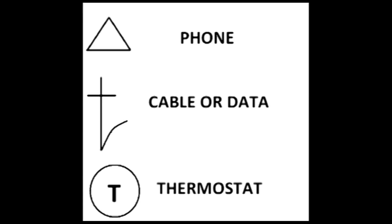Let's add three more symbols to that list. The phone, which is a triangle. Cable TV, which is a long T that hooks into a V. And thermostat, which is just a circled T.